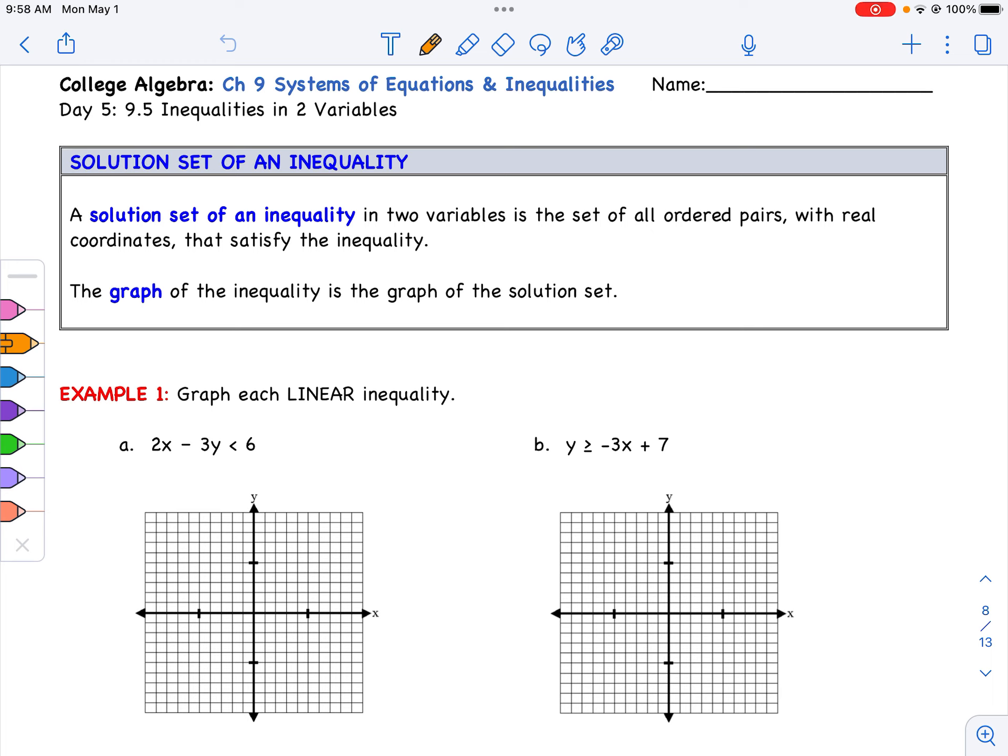The solution set of an inequality in two variables is the set of all ordered pairs with real coordinates that satisfy the inequality. The graph of the inequality is the graph of the solution set. For the first two, we're going to graph each linear inequality. So we'll be graphing a line and then we're going to shade where the solution is.